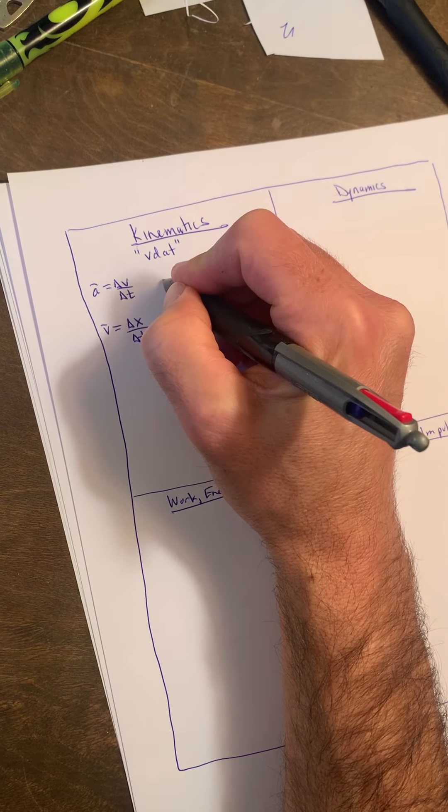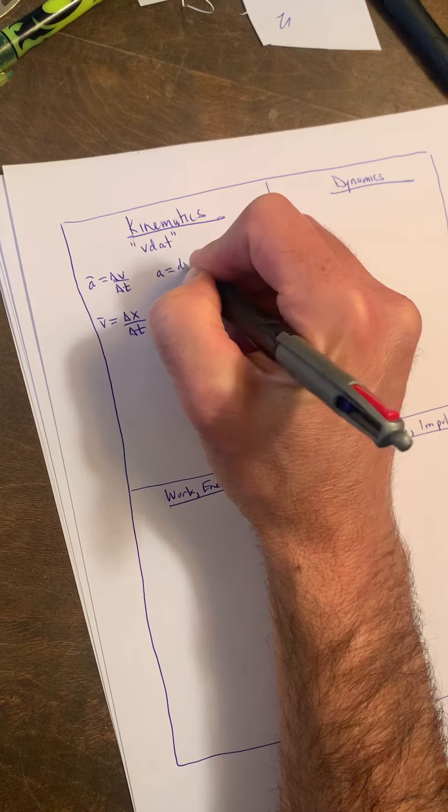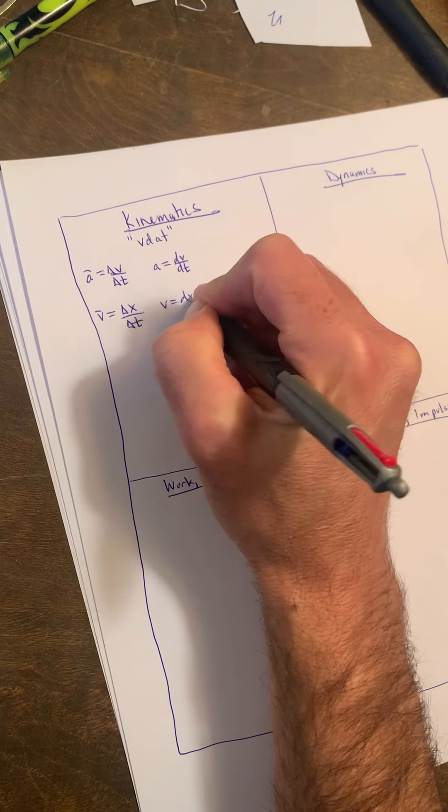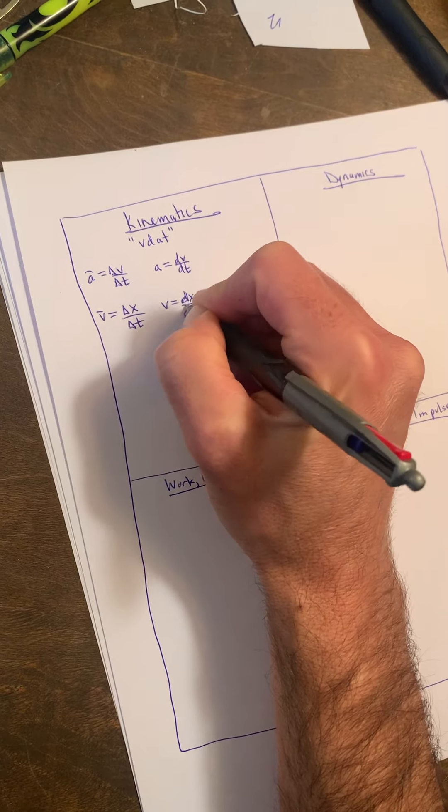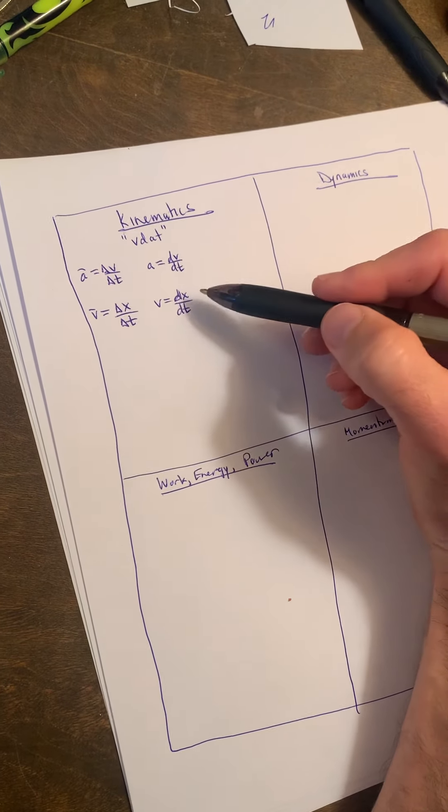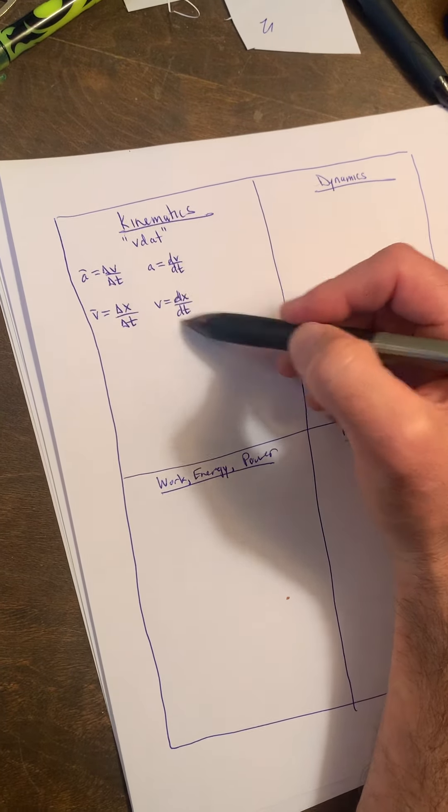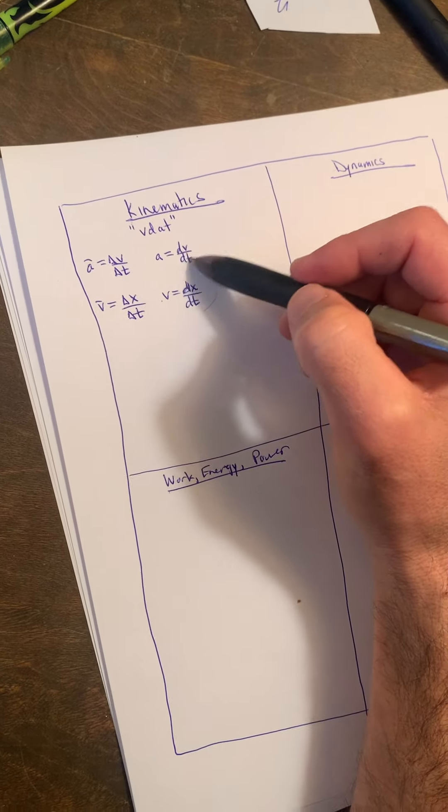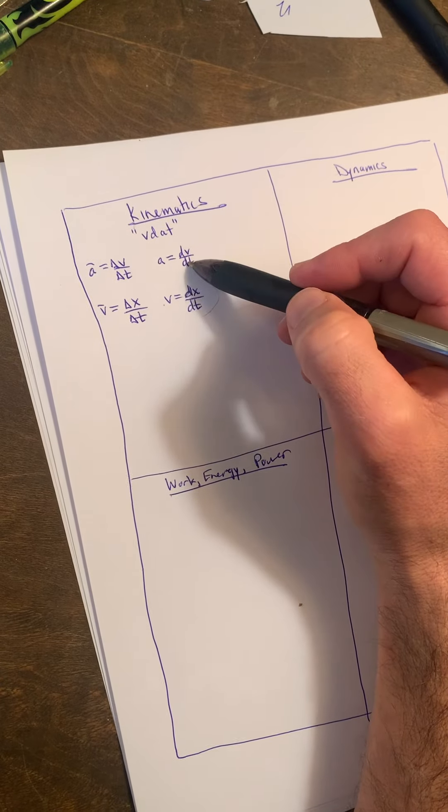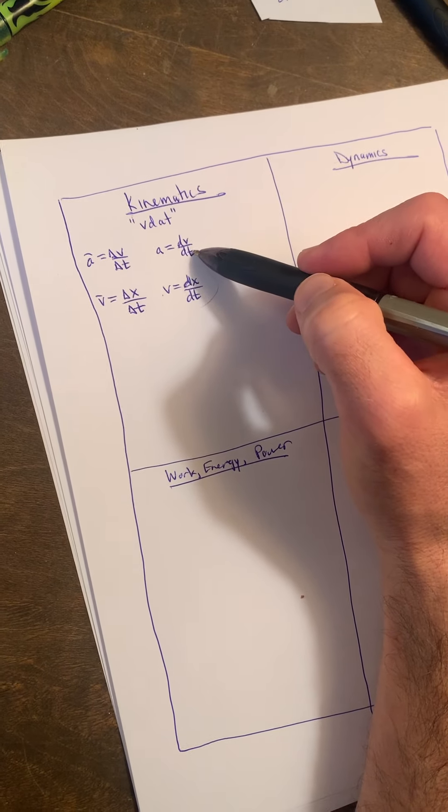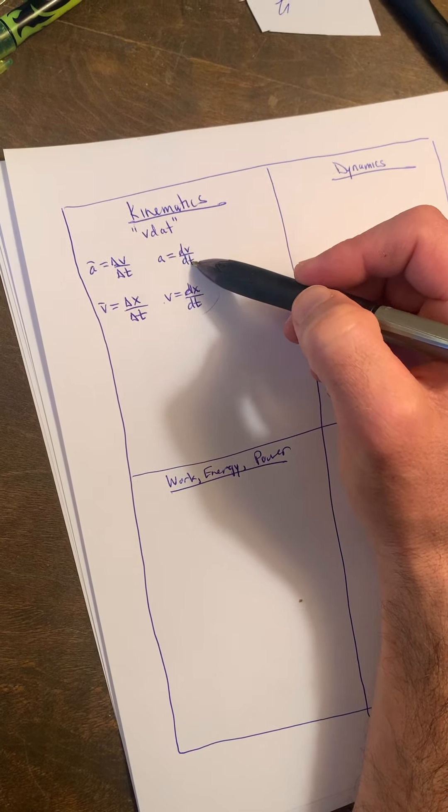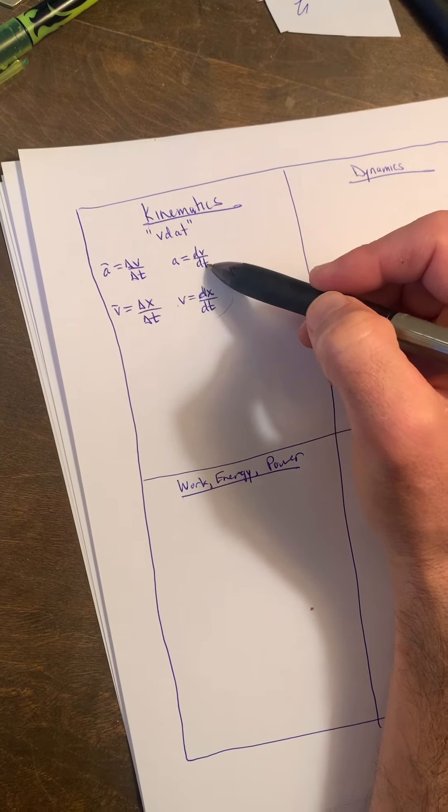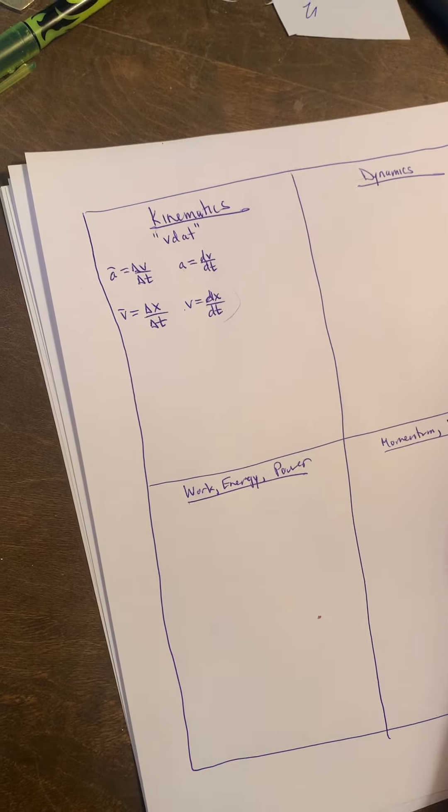We also had the instantaneous versions of these. a was dv/dt and v was dx/dt. Just beware, if given a function x, if you take the derivative with respect to time, you can get the instantaneous velocity function. If given a velocity function, even that one you just derived, you can again take derivative with respect to time and you'll get your instantaneous acceleration function.